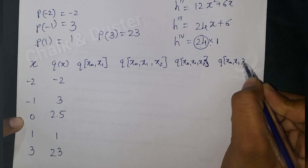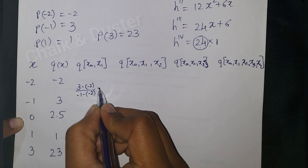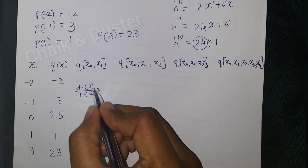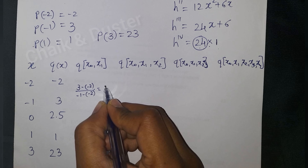The first divided difference is computed as: (3 - (-2)) / (-1 - (-2)) = 5/1 = 5. Similarly, (2.5 - 3) / (0 - (-1)) = -0.5. Then (1 - 2.5) / (1 - 0) = -1.5. And (23 - 1) / (3 - 1) = 22/2 = 11.